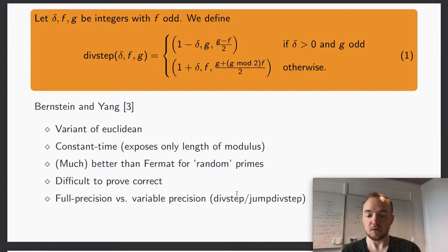It's constant time, which as I mentioned earlier is essential. It's much better than Fermat's little theorem for random primes, in the sense that Fermat's little theorem can be optimized for certain primes. One issue that we encountered is that it's quite difficult to prove correct. The paper proof is on a quite high level, and we didn't actually prove the algorithm correct but only proved the division step correct.